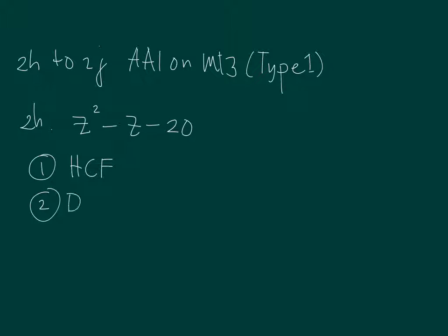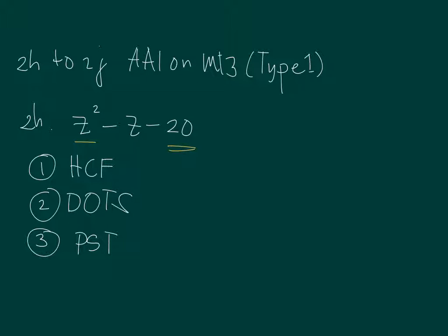Is it a difference of two squares? We have three terms, so this is not a difference of two squares. Is it a perfect square trinomial? The first term is a perfect square, but if you look at the last term, 20 is not a perfect square, so it doesn't follow the perfect square trinomial form. So how do we approach this kind of trinomial? Z squared minus Z minus 20 — if it is not a perfect square trinomial.